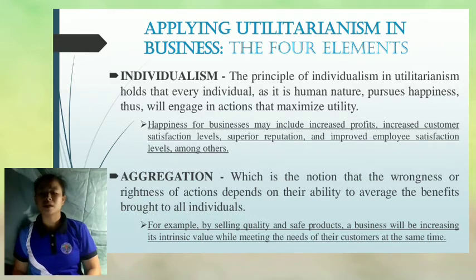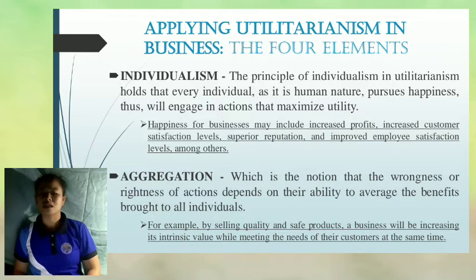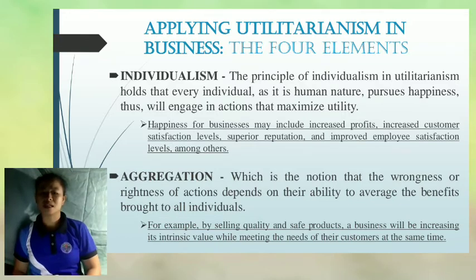The last element of Utilitarianism in business is aggregation, which is the notion that the wrongness or rightness of actions depends on their ability to average the benefits, both to all individuals. Perspectives on Utilitarianism suggest that the consequences of an action should bring happiness not only to an individual but to the community around him or her. A business applying these elements should engage in activities that increase its profits, while at the same time serving the best interest of its entrepreneurs, the community, and the government. For example, in selling quality and safe products, a business will be increasing its value while meeting the needs of their customers at the same time.